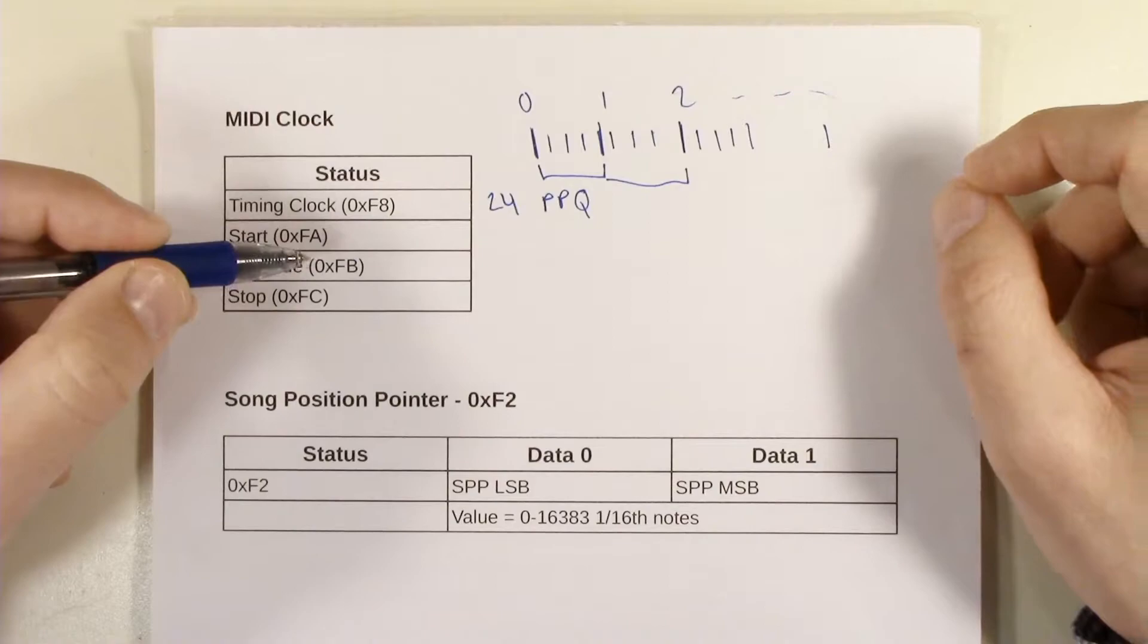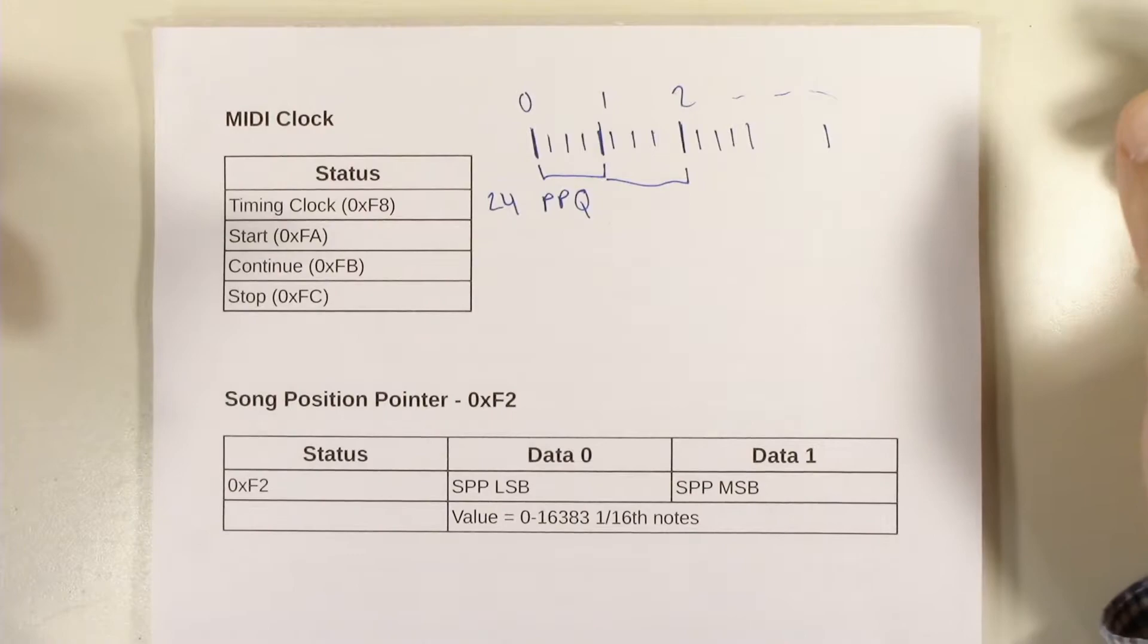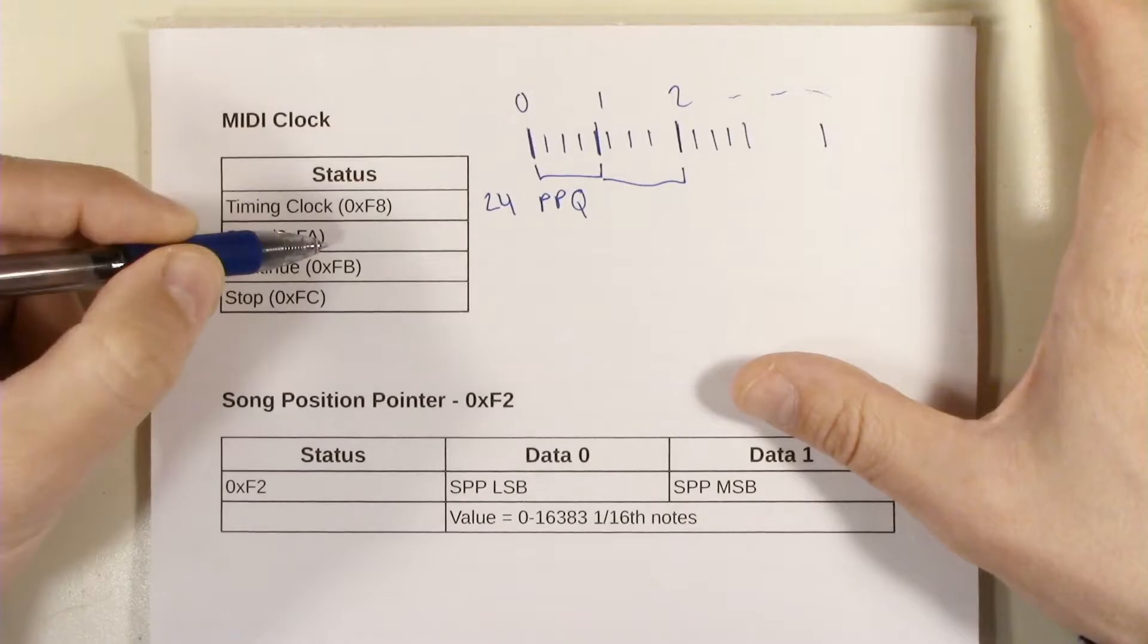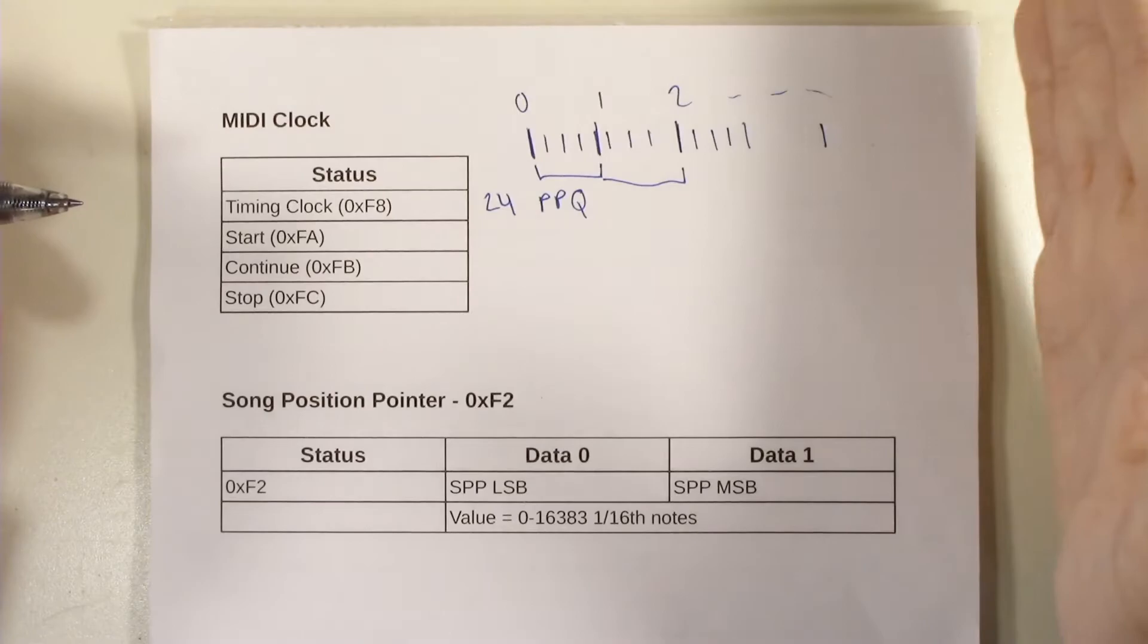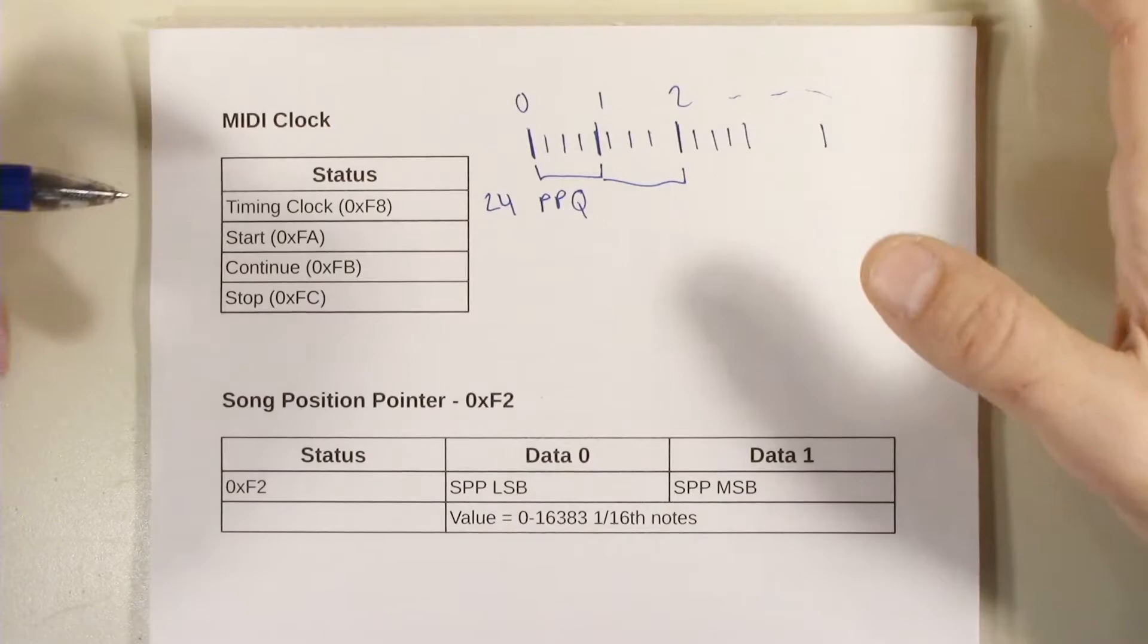So when you get a start message, start means go back to the very beginning of the song and that means, that's kind of like saying reset our position. So when you receive a start message it will go back to the song and then when it gets the next clock pulse, the F8 timing clock, then it will start, it'll say that's zero. So this is kind of like gets it queued up and waiting.